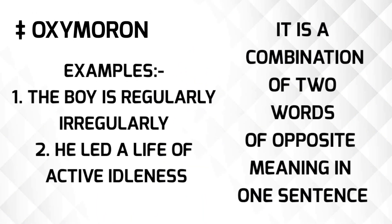The next figure of speech is oxymoron. Oxymoron is a combination of two words of opposite meaning in one sentence. For instance, 'The boy is regularly irregular.' Both 'regularly' and 'irregular' are opposite words in one sentence. A second example is 'He led a life of active idleness.' 'Active' and 'idleness' are both opposite words in one sentence.